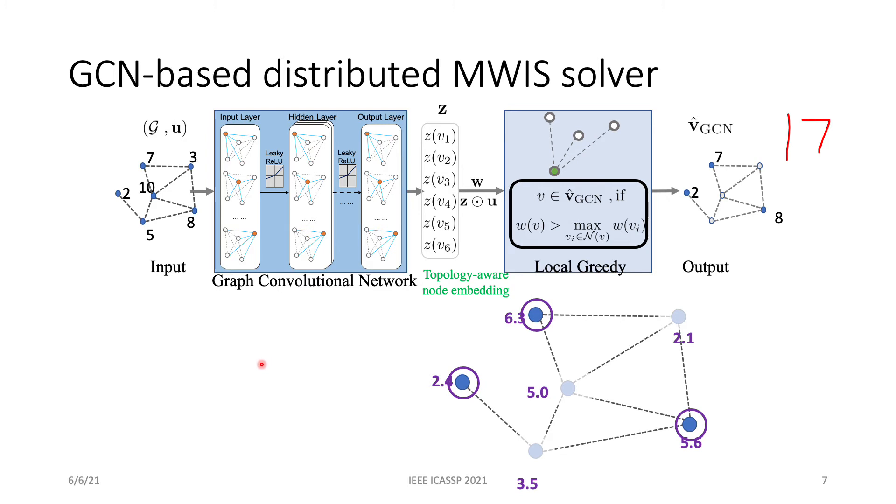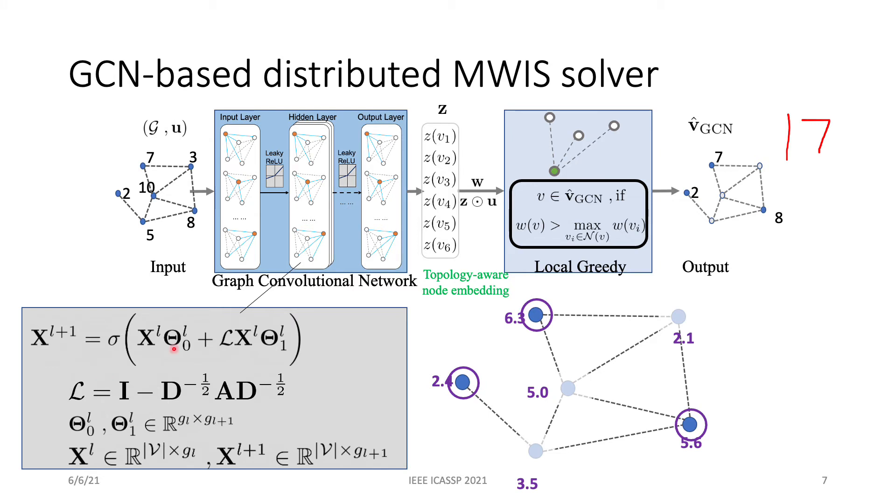Now let's look at how the GCN is implemented. Here is a single layer of the GCN. It's basically a Chebyshev graph filter with an activation function. The calligraphic L is the normalized Laplacian of the graph. Theta 0 and theta 1 are the trainable weights. X_L is the input feature, and X_L+1 is the output feature of this layer.